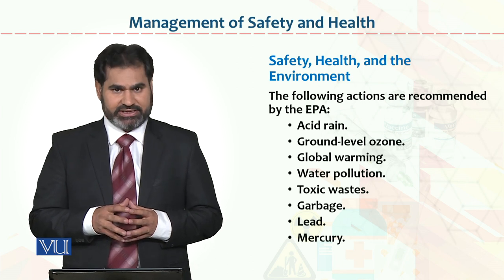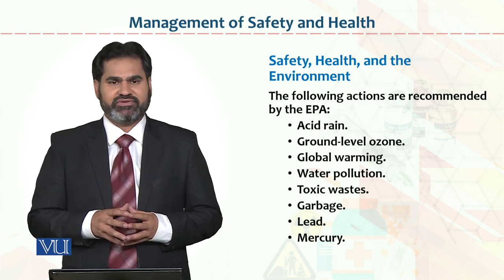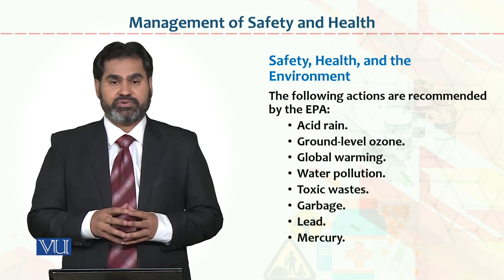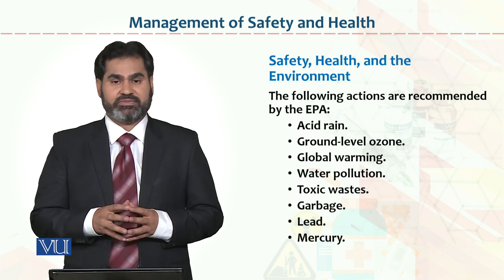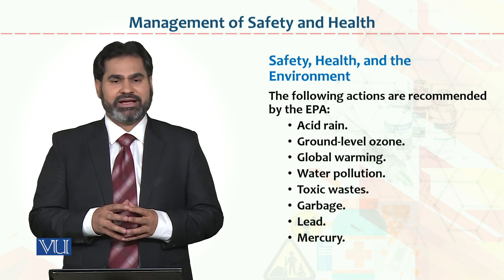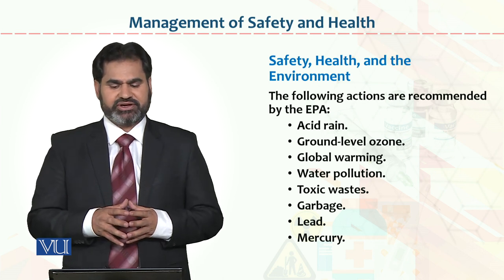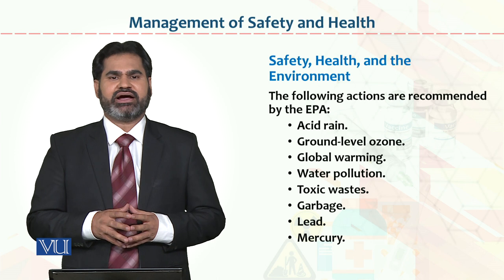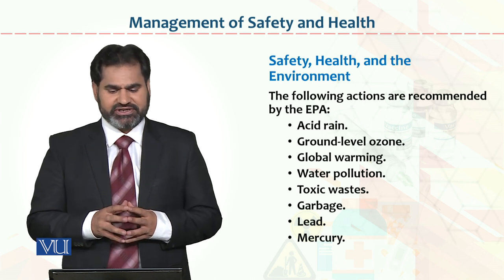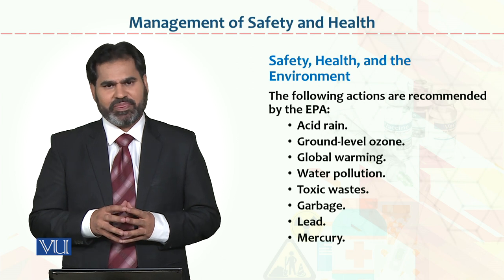The following actions are recommended by the EPA: number one, acid rain; number two, ground level ozone; global warming; water pollution; toxic waste; garbage; lead and mercury. Yeh mukhtlif qism ki recommendations hain — agar inhe follow kar liya jaye, toh organizations safety, health, and environment ke upar kaafi focus kar sakti hain.